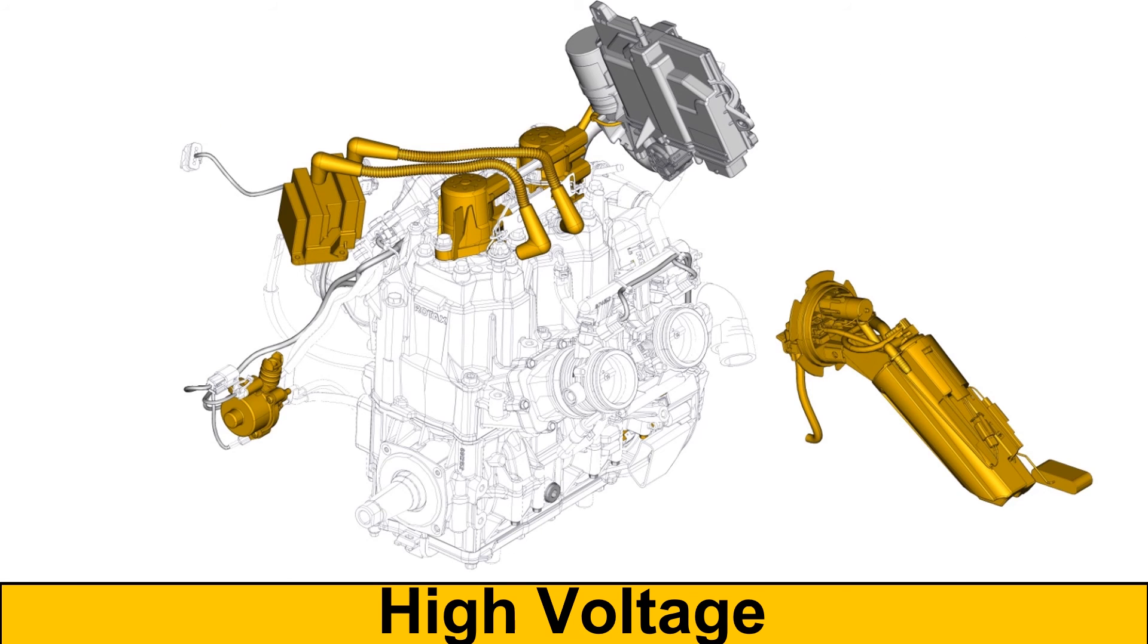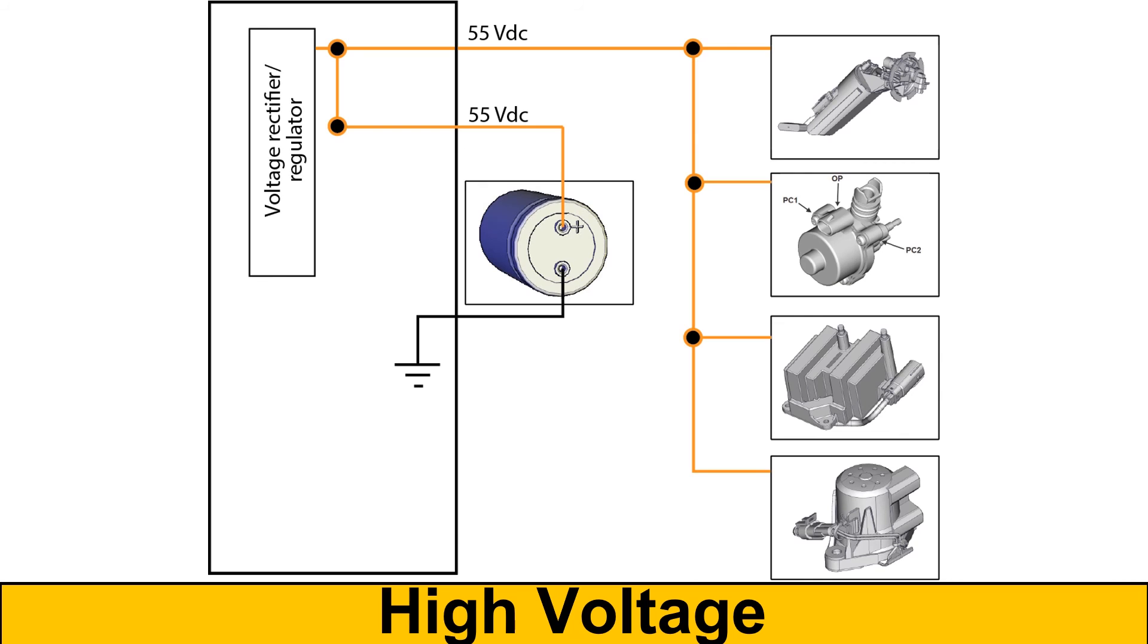The high voltage system includes the main vehicle components required for engine starting, running and lubrication. The components receive power before the 5 and 12 volt systems.